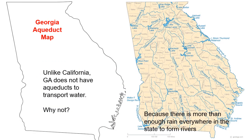Unlike California, we don't use aqueducts here in the state of Georgia to transport water. Why not? Because everybody's close to a river. The Chattahoochee River is only a few miles from us here, and even beyond rivers, there are enough streams and creeks that we can get water from without having to transport it a long distance from somewhere else.